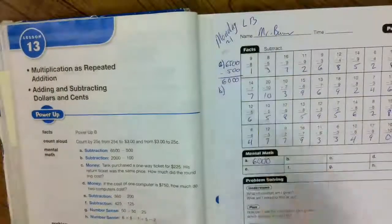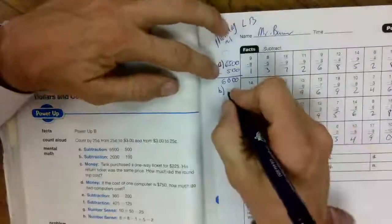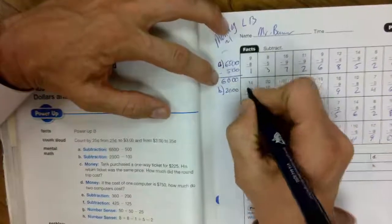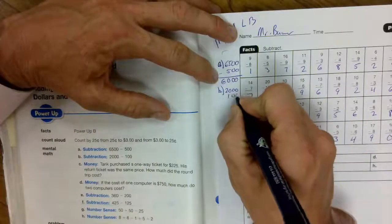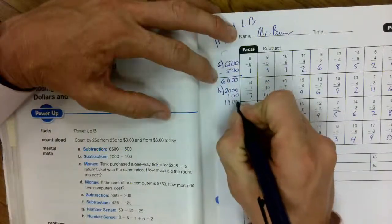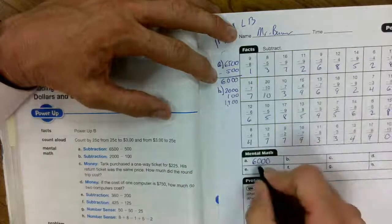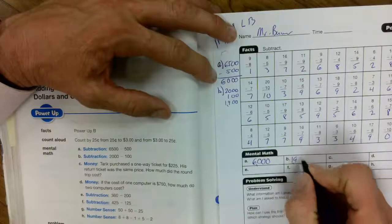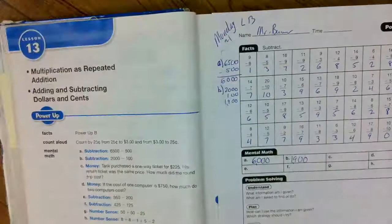B. Now, these are mental math. You're supposed to be able to do it in your head real quick. 2,000 minus 100 is like saying 20 minus 1 is 1,900.